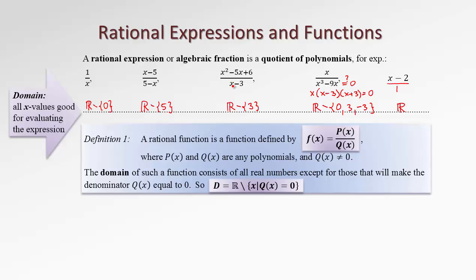Since we introduce rational expressions as quotients of two polynomials, let's say p of x over q of x, with the condition that q of x, the denominator, must be different than zero. Therefore, the domain of such function consists of all real numbers except for the ones that will make denominator q of x equal to zero. Generally, we can write domain as all real numbers minus, which stands for except for the set of all real x's, such that q of x is equal to zero. Exclude the points that will make denominator zero.